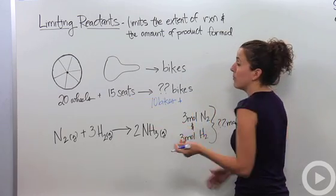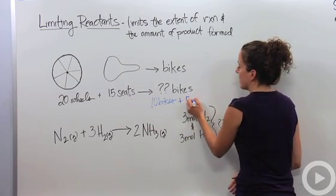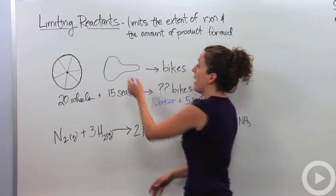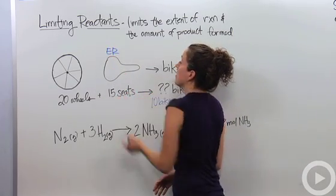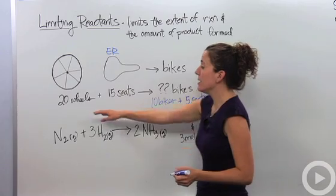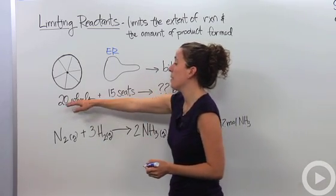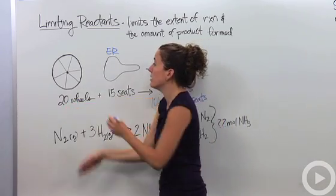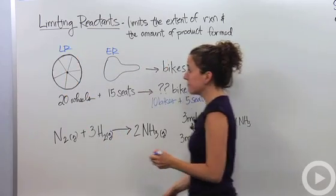When finished, you have 10 bikes and five seats left over — five seats in excess. This is your excess reactant. You're limited by the amount of wheels, so the product is dependent on the limiting reactant; in this case, the wheels. That's the limiting reactant.